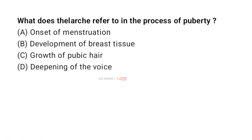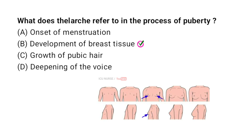What does thelarche refer to in the process of puberty? A: Onset of menstruation, B: Development of breast tissue, C: Growth of pubic hair, D: Deepening of the voice. The correct answer is B: Development of breast tissue. Thelarche refers to the beginning of breast development, which is often the first sign of puberty in girls.